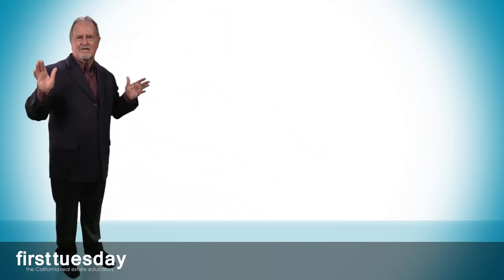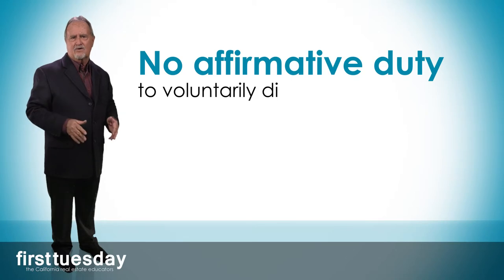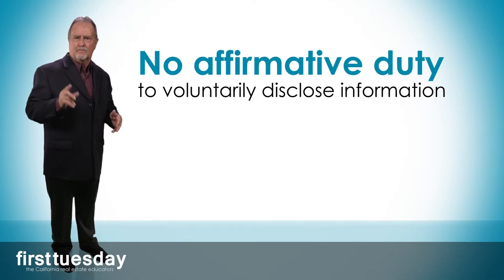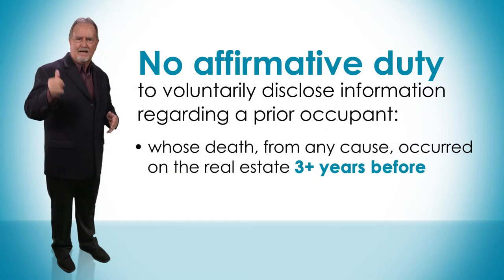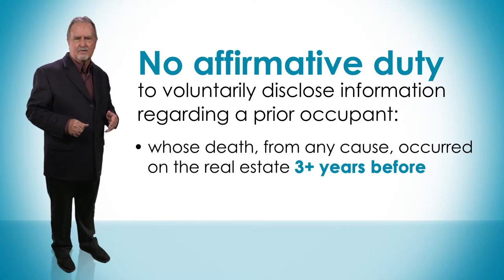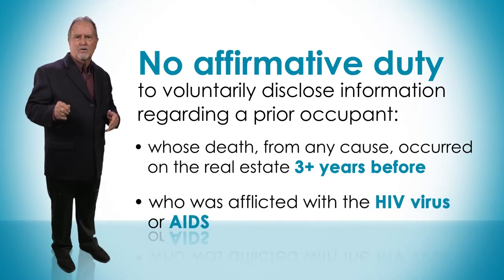Did the seller's agent breach their general agency duty to the buyer by failing to disclose the death on the property, occurring more than three years before the buyer submitted their offer? No. A seller's agent has no affirmative duty to voluntarily disclose information to a potential buyer regarding a prior occupant whose death from any cause occurred on the real estate more than three years prior to the purchase offer, or who was afflicted with the HIV virus or AIDS.